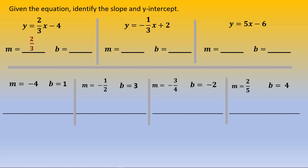And the number after the x, minus 4, is b. So b equals negative 4. For the equation y equals negative 1/3 x plus 2, m is negative 1 over 3 and b is 2. For the equation y equals 5x minus 6, m is 5 and b is negative 6.